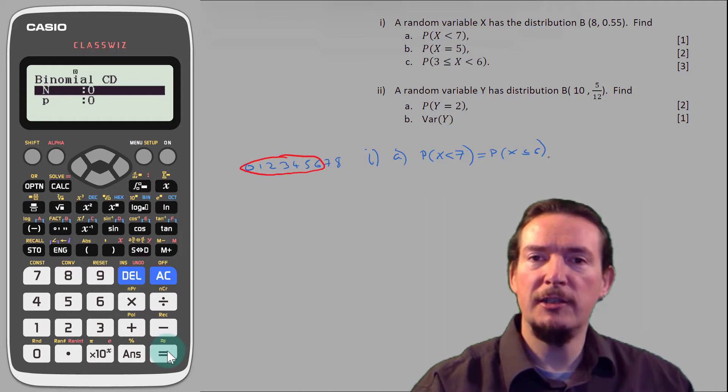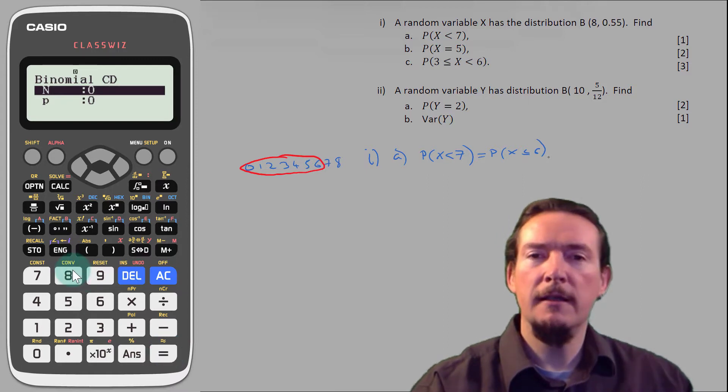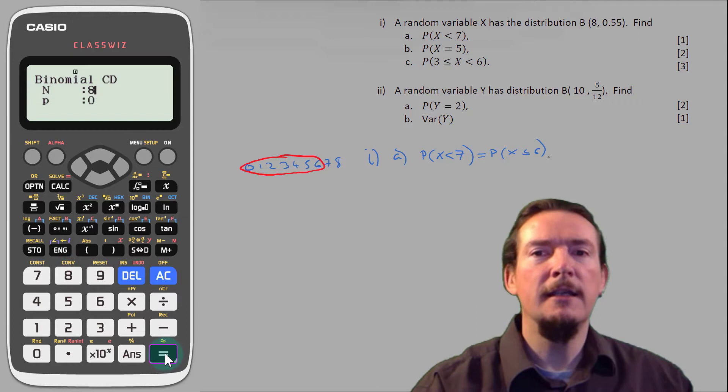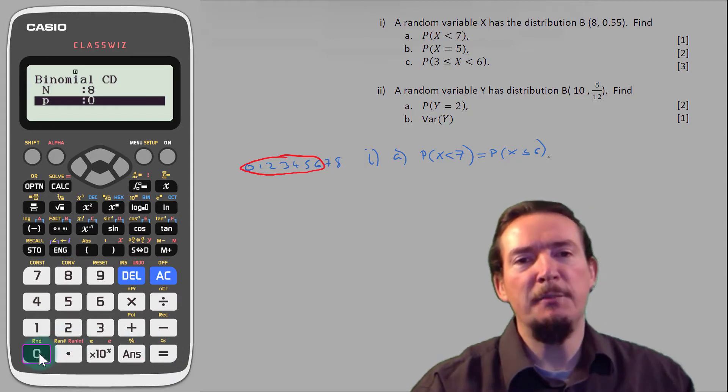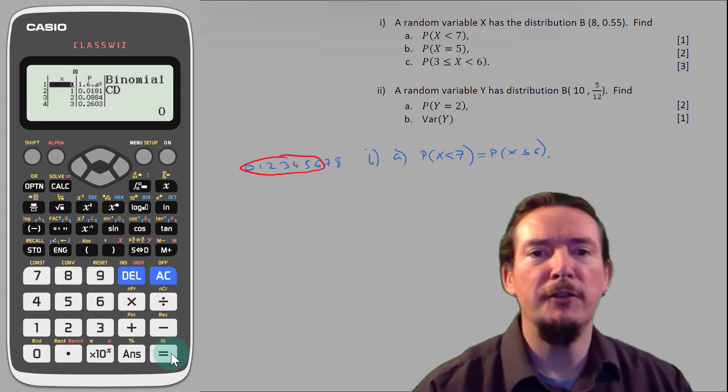Pressing equals takes you to the next row, and pressing it again at the end of the list takes you to this screen where we can enter our parameters n and p. The number of trials n is 8, and the probability of success p is 0.55. Pressing equals again takes us back to the table view, but now we have a second column populated with the probabilities displayed to four decimal places.